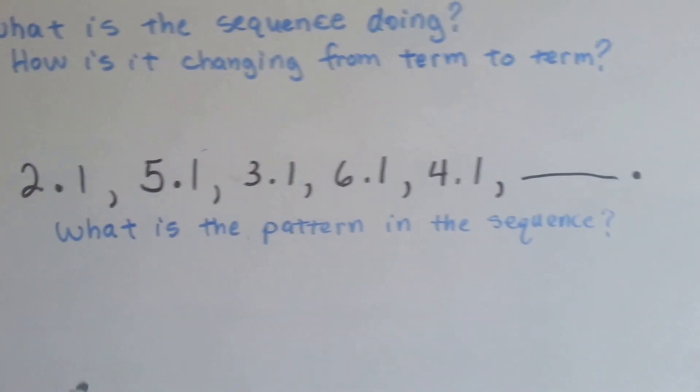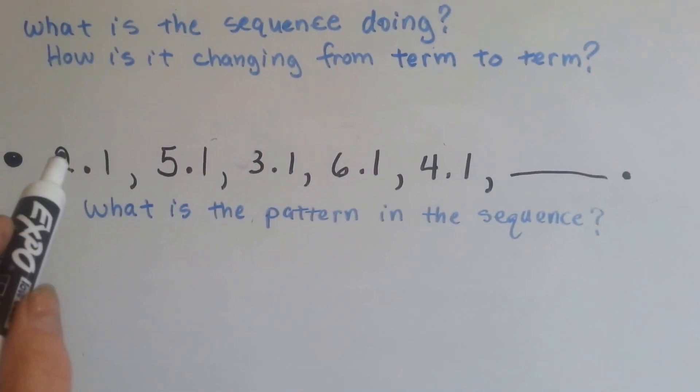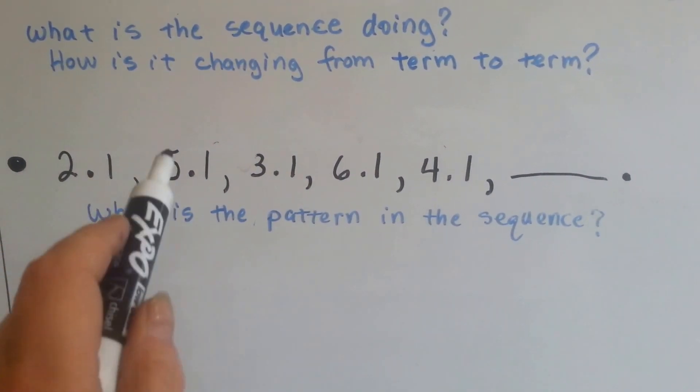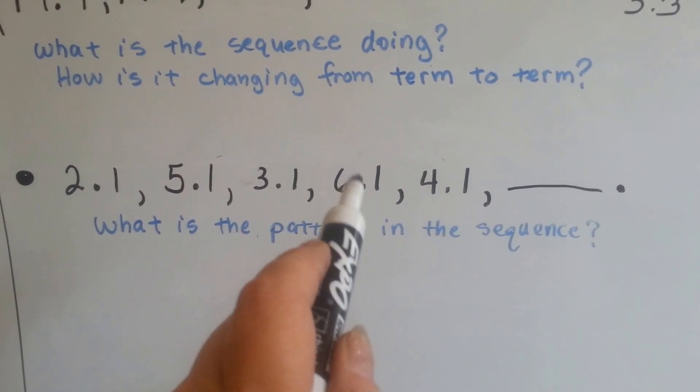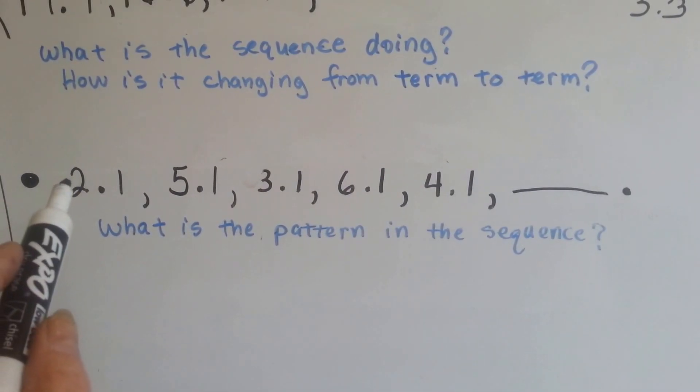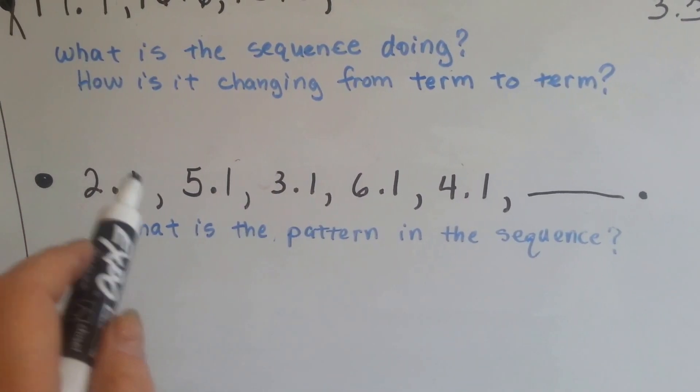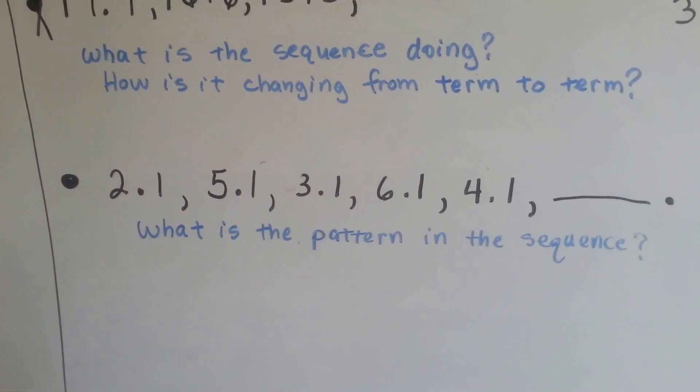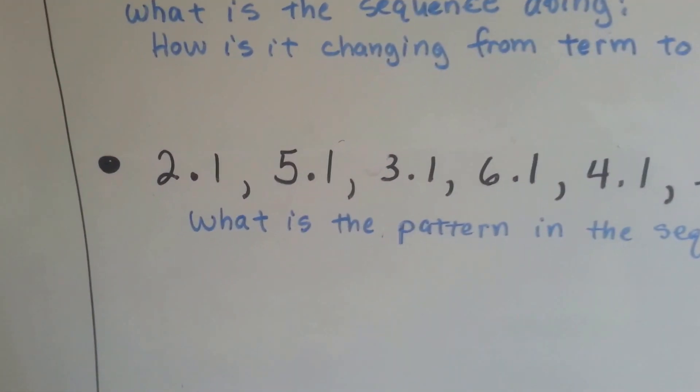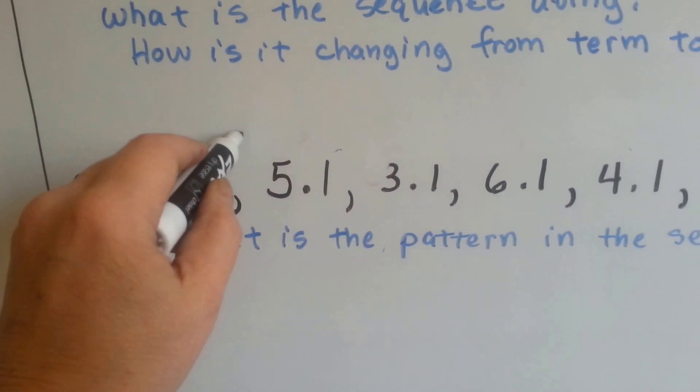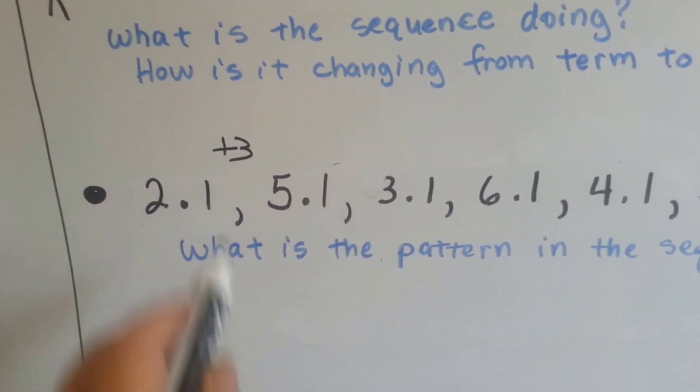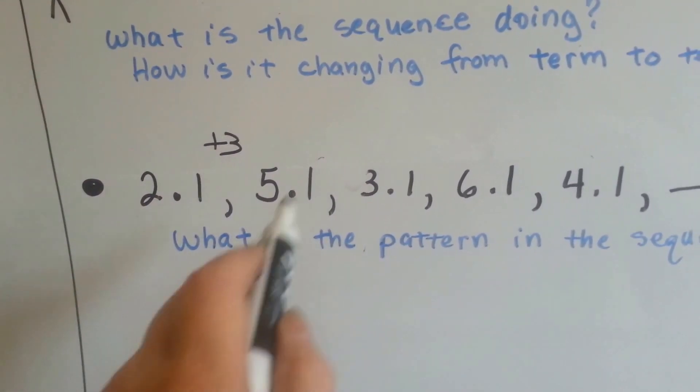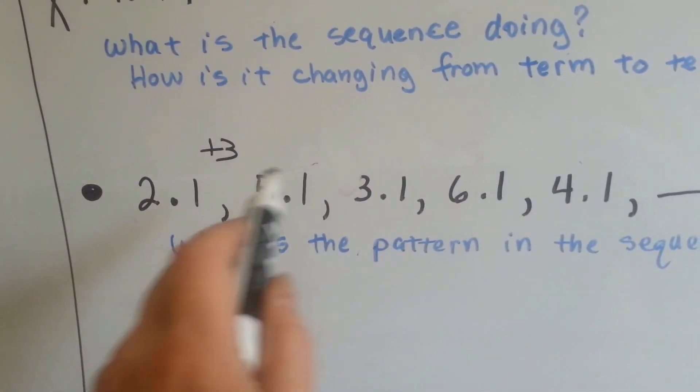What about this one? You should be able to do this one. 2 and 1 tenths, 5 and 1 tenths, 3 and 1 tenths, 6 and 1 tenths. What is it doing? It went from 2 and 1 tenths to 5 and 1 tenths. What's the difference between the two of them? Well, if you said it increased by 3, you're right. By 3 whole. No tenths, because the tenths are all staying the same. Then what did it do? It went from 5 and 1 tenths to 3 and 1 tenths.